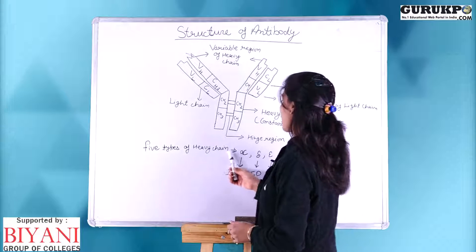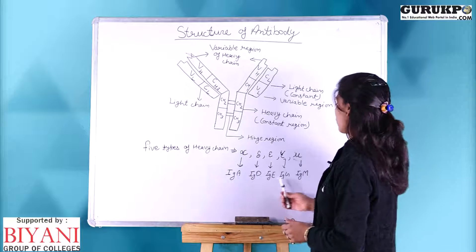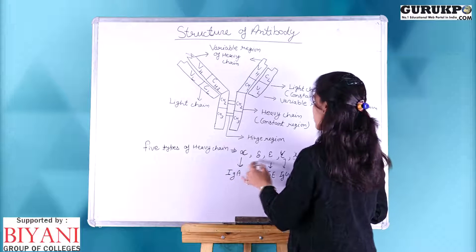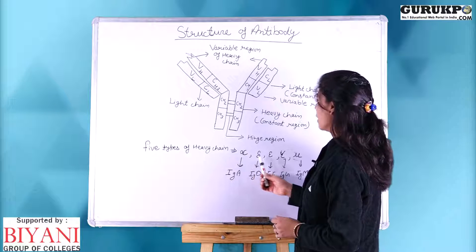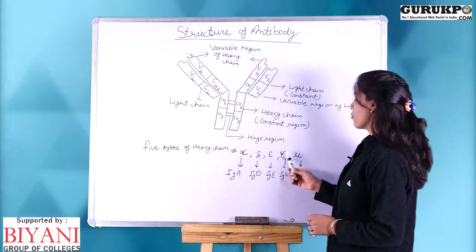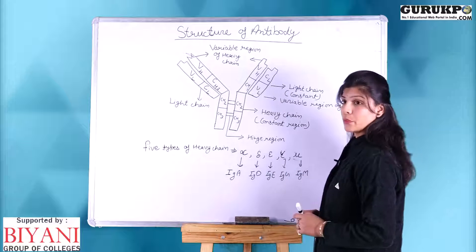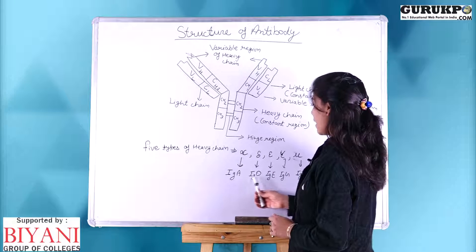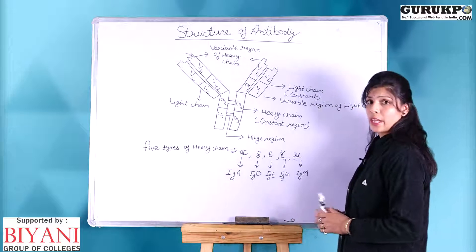There are five types of heavy chain present in the five types of antibody classes, and these heavy chains are denoted by Greek letters: first is alpha, second is delta, third is epsilon, fourth is gamma, and fifth is mu. The corresponding antibodies are IgA, IgD, IgE, IgG, and IgM.